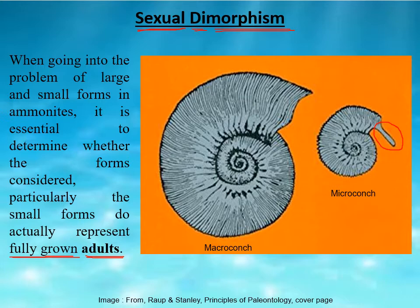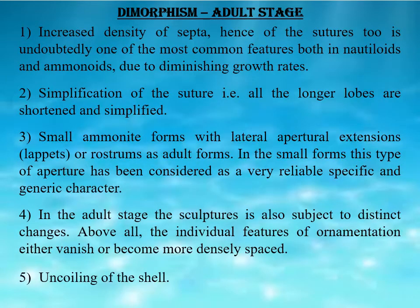It is commonly found in nature that female counterparts are generally larger in size compared to males due to the requirement of higher metabolic energy for biological work done by females. In humans, males are generally larger, but apart from humans, in most of the organic world females are larger than males. Likewise in cephalopods, the larger macroconchs are considered the female counterparts and the smaller microconchs the male counterparts. This picture is taken from the cover of the famous book Principles of Paleontology by Raup and Stanley.